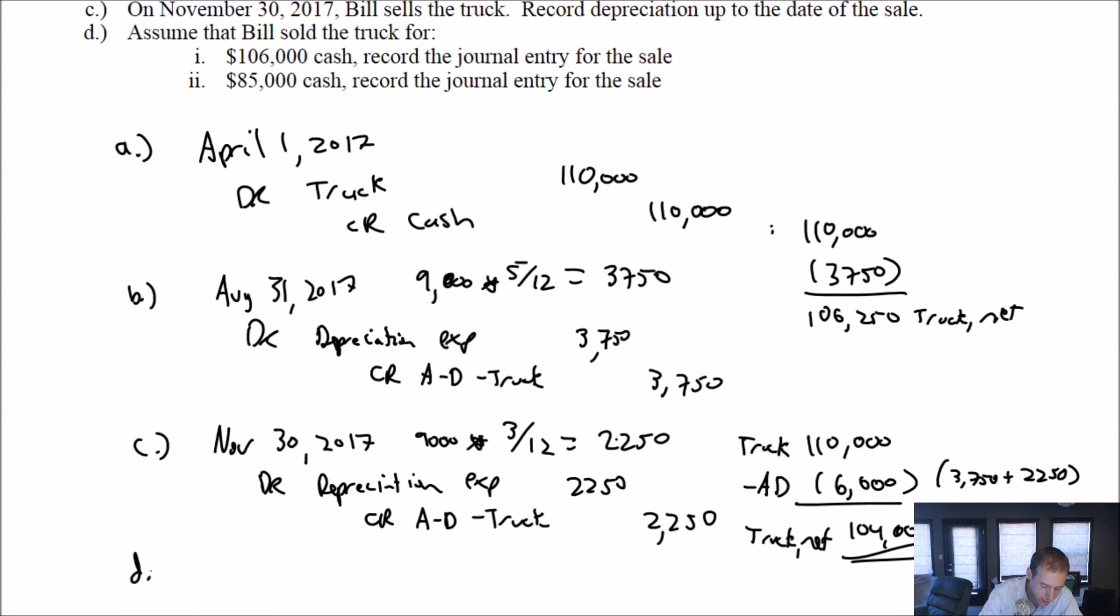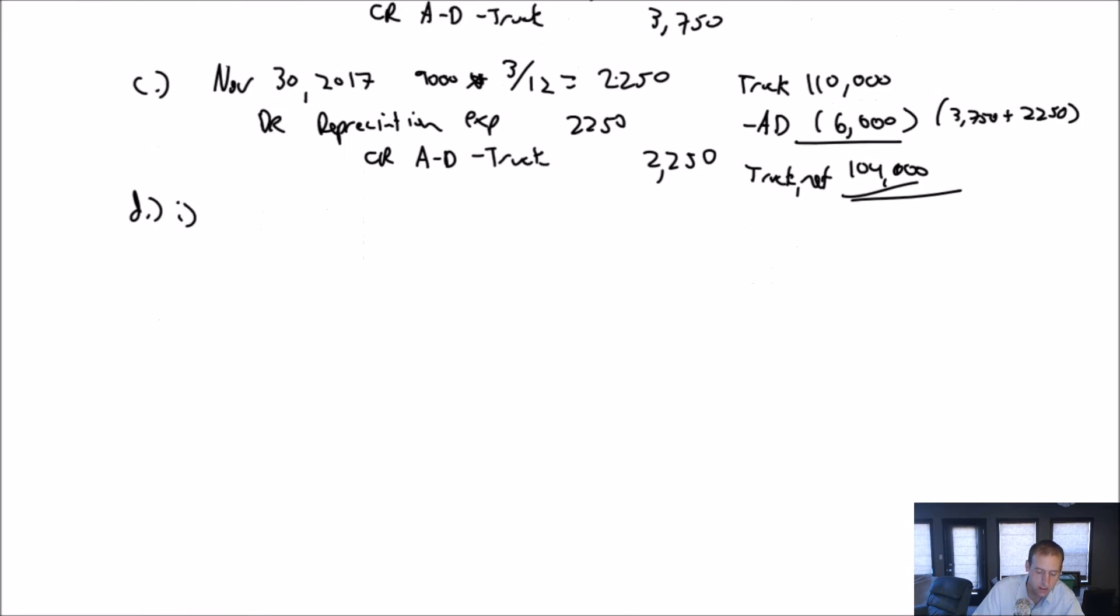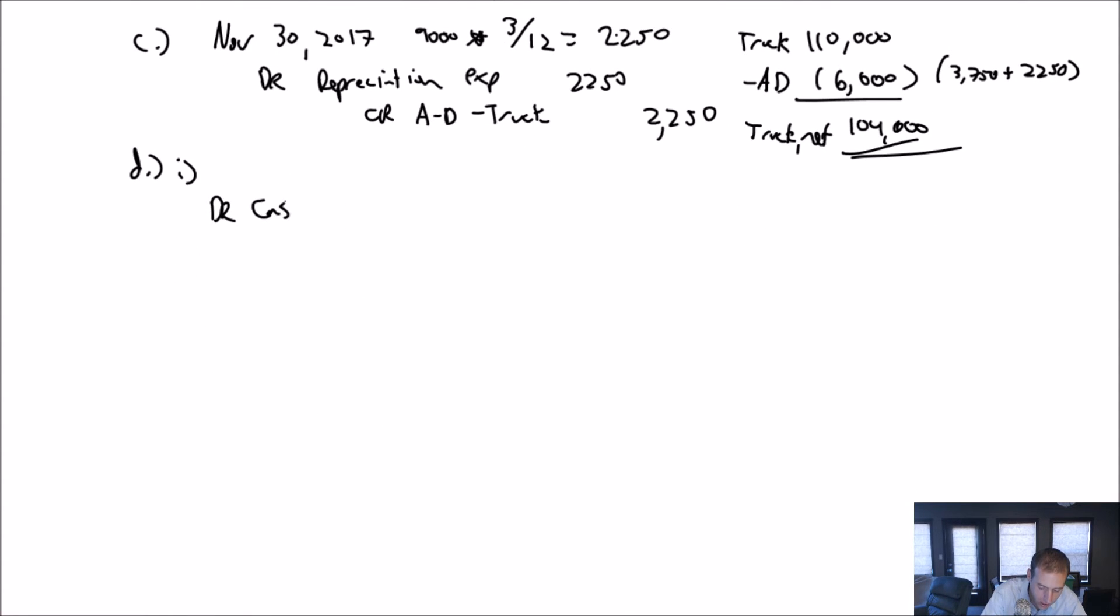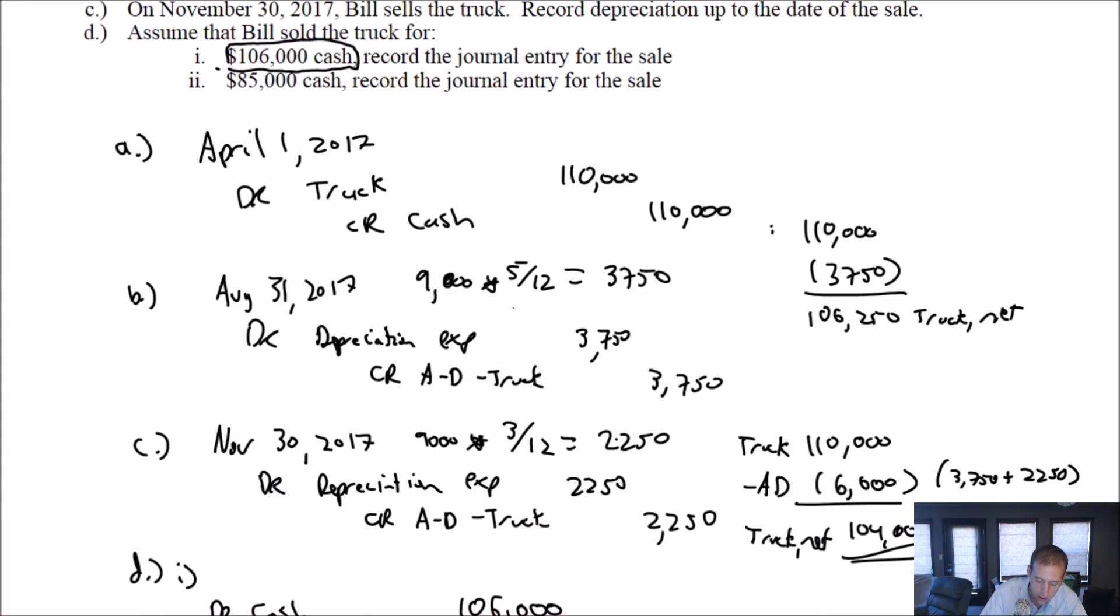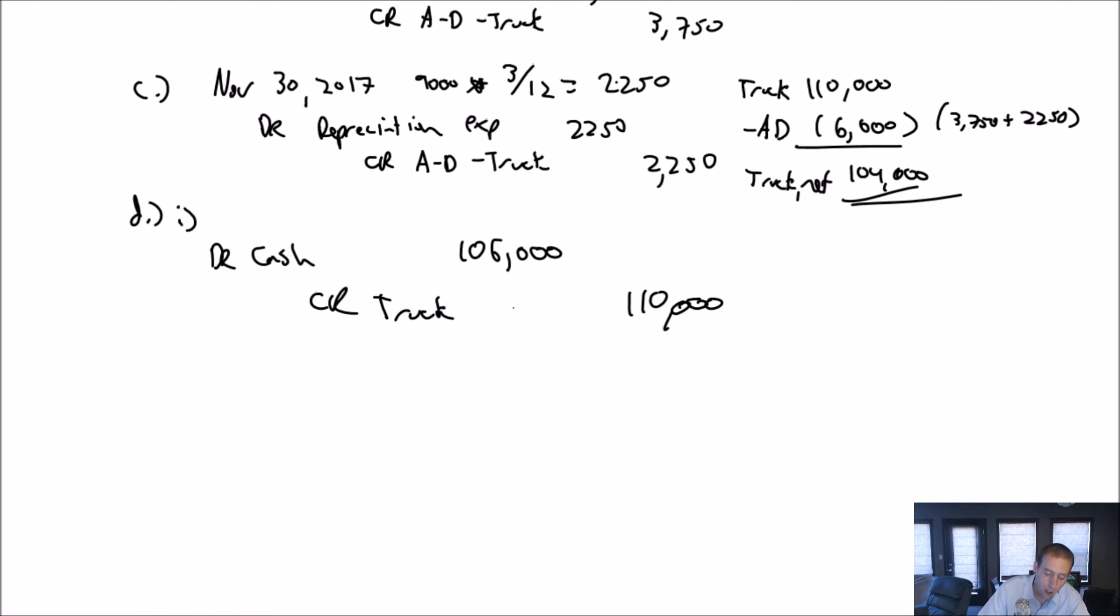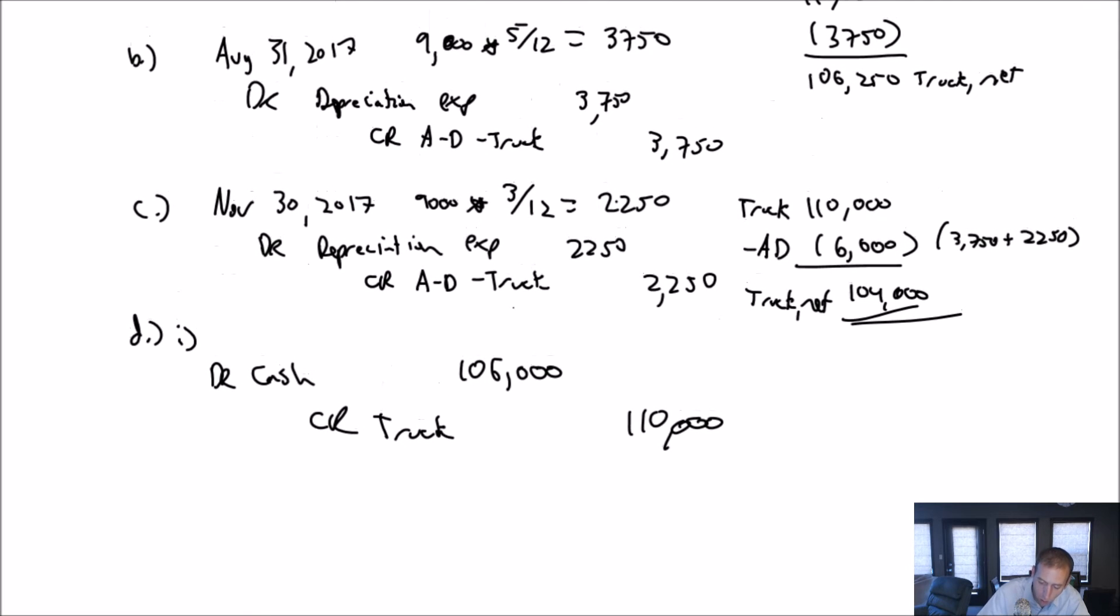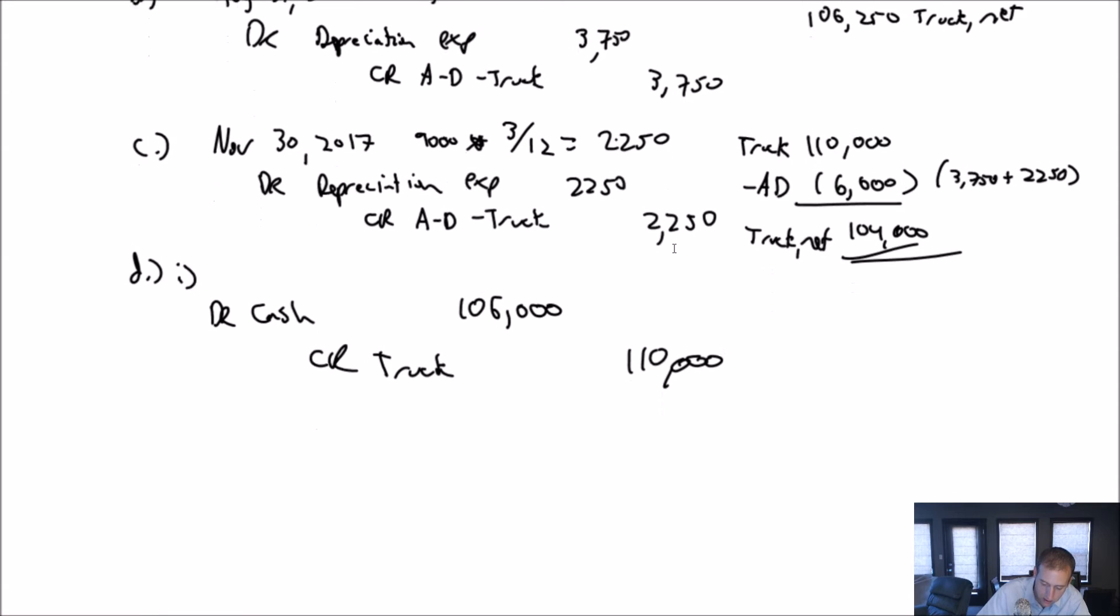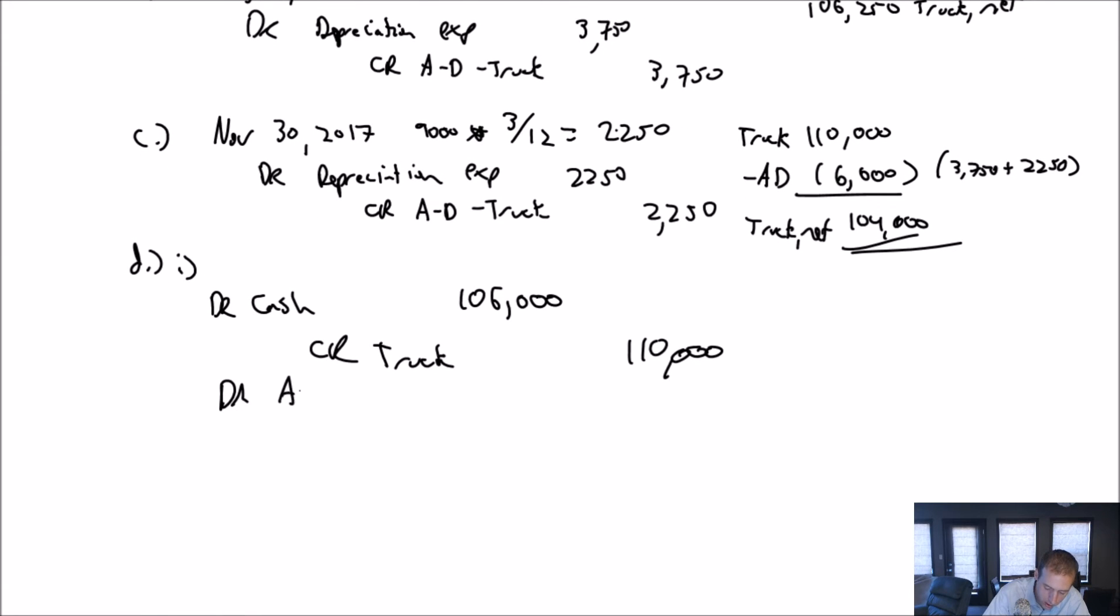Part D, assume Bill sold the truck for $106,000 cash. Record the journal entry for the sale. We get paid $106,000 for this truck. Debit cash $106,000. We got to get rid of the truck. The truck is on our books for $110,000. We also have to get rid of the accumulated depreciation on the truck. The total accumulated depreciation is $6,000. So I debit AD truck for $6,000.